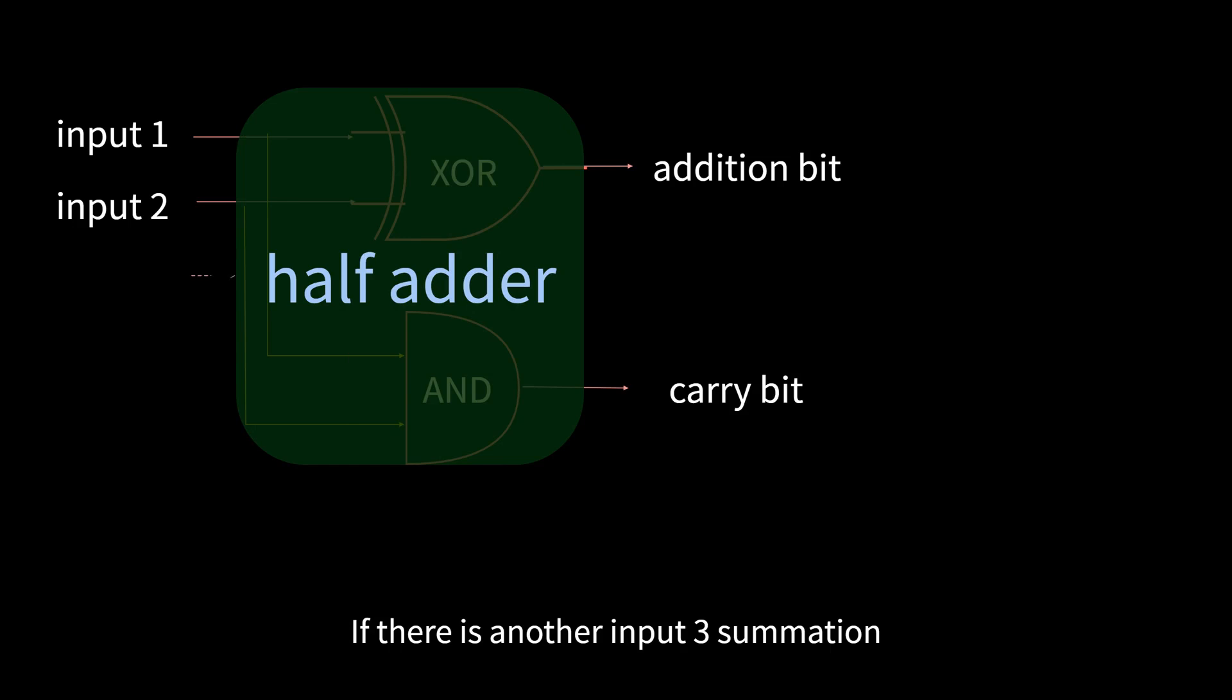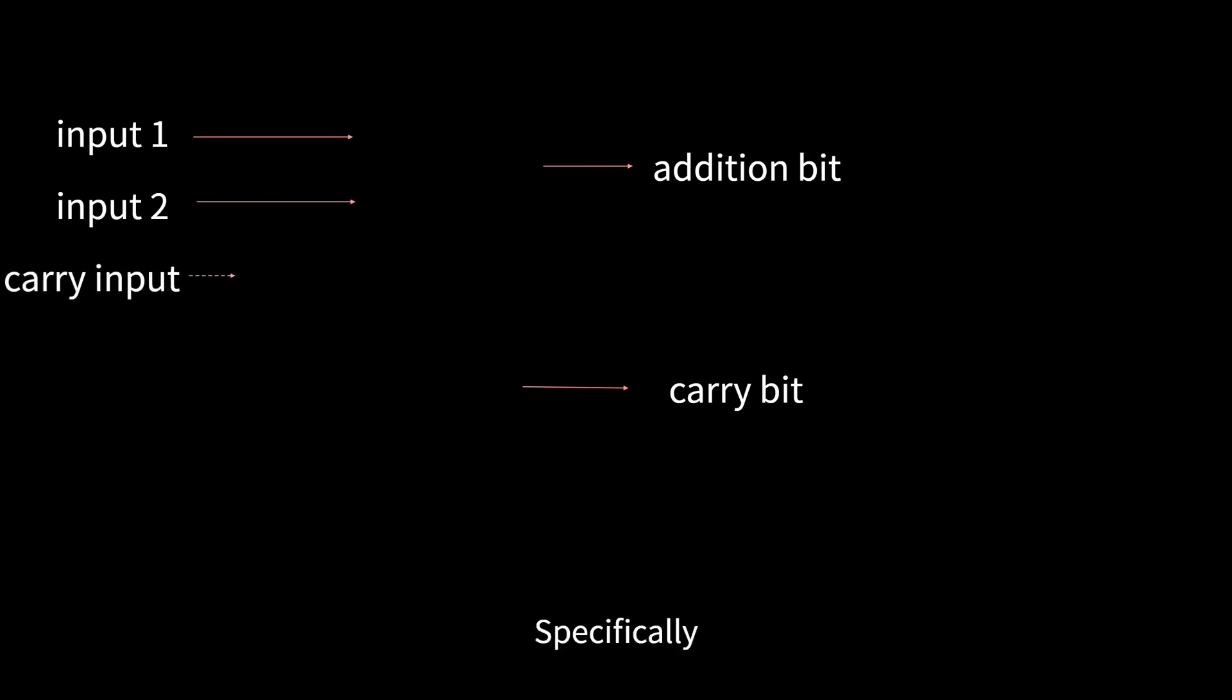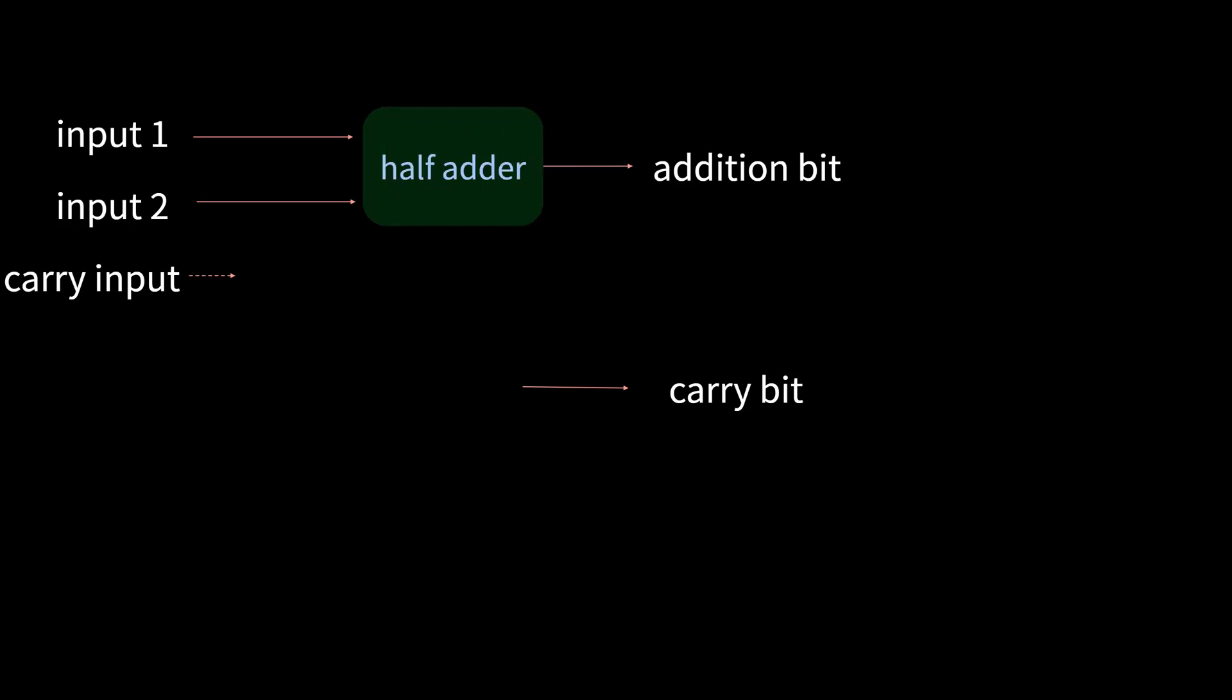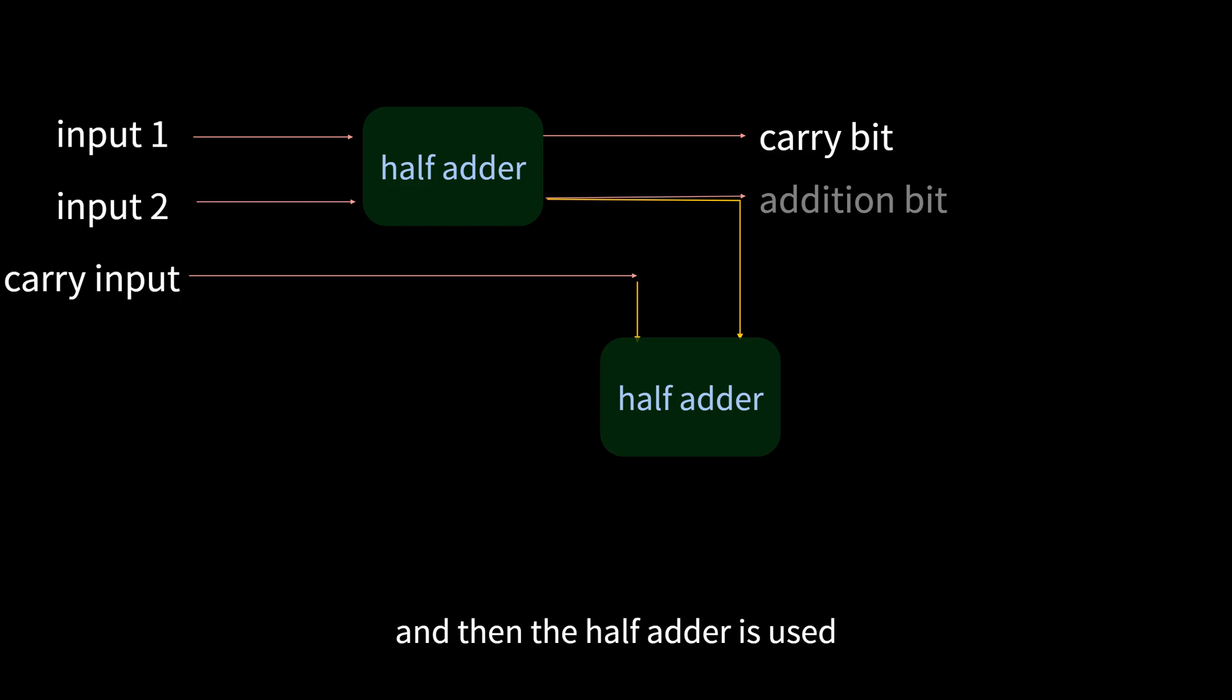If there is another input 3, it becomes a more complicated full adder. Here, input 3 is the input of carry. Specifically, first use the half adder to add the input 1 and input 2 of this bit, and output the addition bit and the carry bit. Then, the result of this bit is input with the carry of the previous bit, and then the half adder is used.